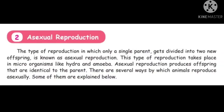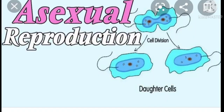First topic: asexual reproduction. The type of reproduction in which only a single parent gets divided into two new offspring is known as asexual reproduction. This type of reproduction takes place in microorganisms like hydra and amoeba. Asexual reproduction produces offspring that are identical to the parent. There are several ways by which animals reproduce asexually.